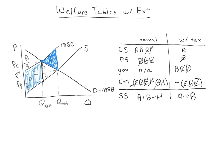I would go ahead and draw a generic externality — say for a positive consumption externality — and try to repeat this analysis. Verify that when you compare the normal situation with an optimal corrective subsidy (since it's a positive externality, you'd want to subsidize it), you get the deadweight loss that you'd expect. Here we expected it to be H, and by comparing the two social surplus values we confirmed the deadweight loss of the normal situation is H. Thanks, bye.